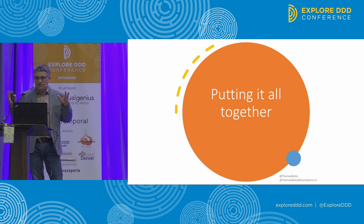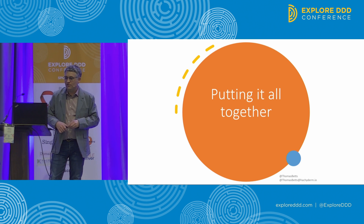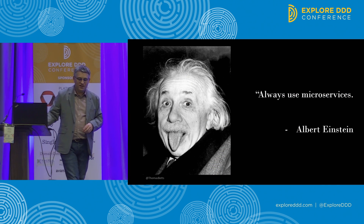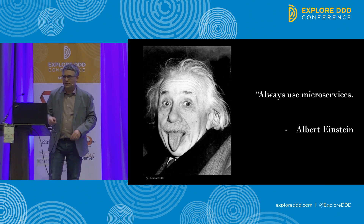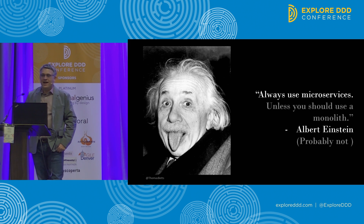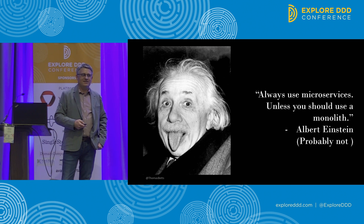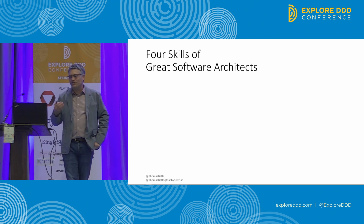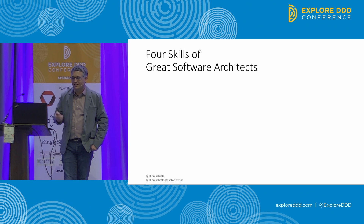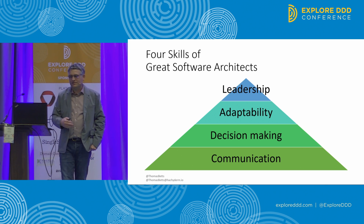So that's the four important skills. Let's put all that together. Reviewing the four skills of great software architects: communication, decision-making, adaptability, and leadership.